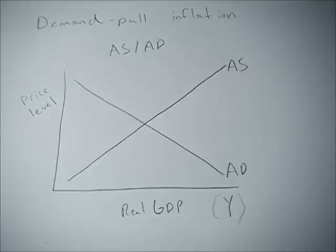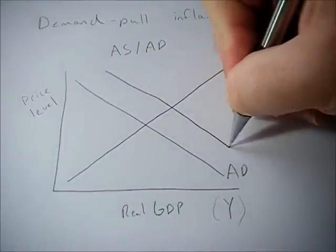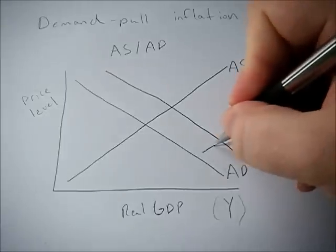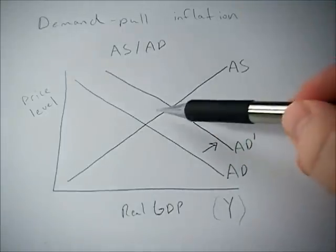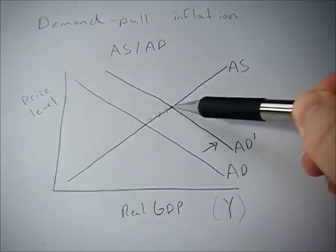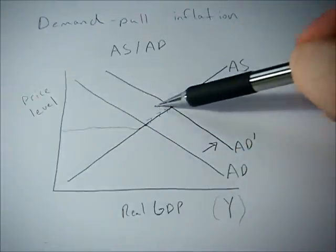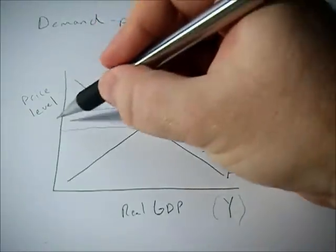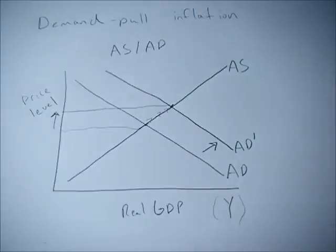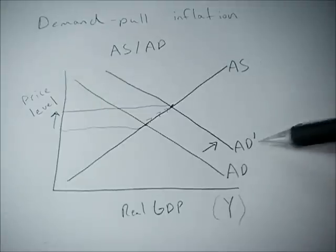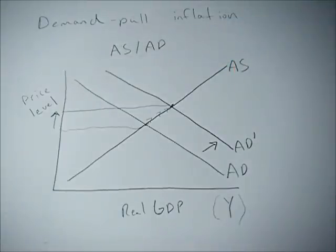Demand-pull inflation implies that demand is causing the inflation. If we have an increase, or a rightward shift, in aggregate demand, we reach a new equilibrium. When aggregate demand increases, the new equilibrium has a higher price level — and a higher price level means inflation. Prices go up, so demand is pulling this inflation, hence demand-pull inflation.